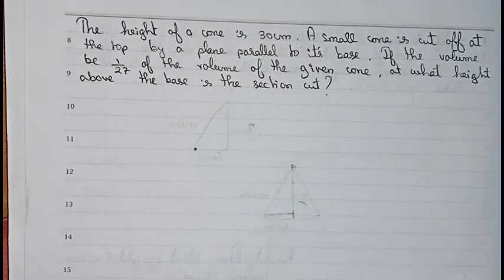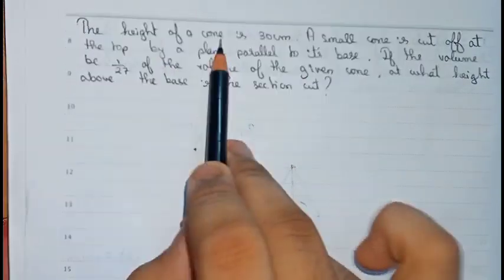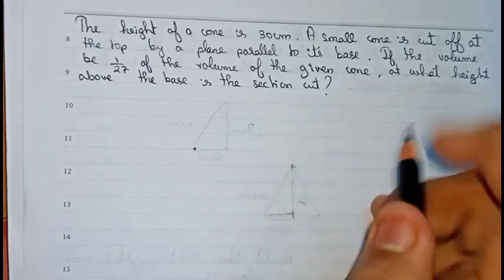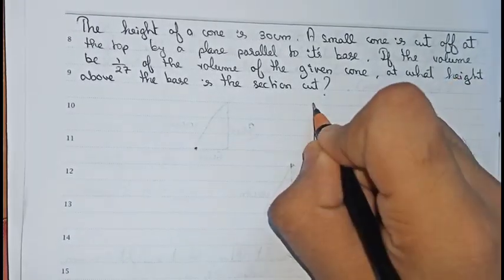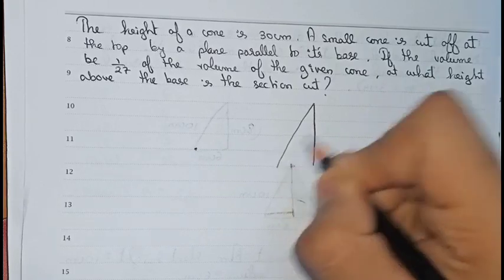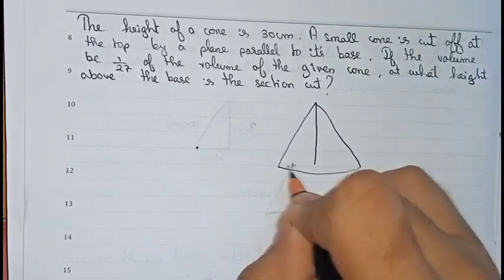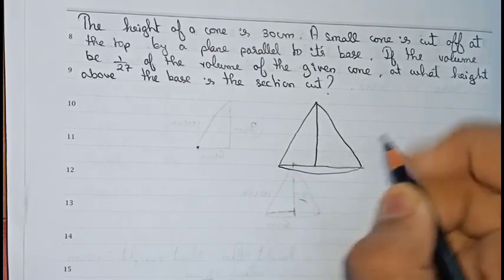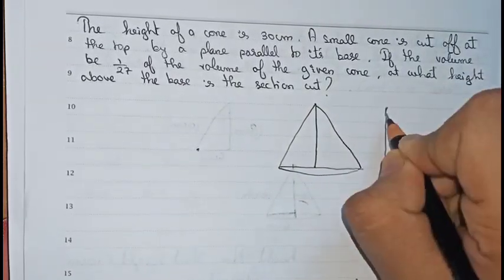So this is our question. As always, first we draw a diagram. The height of the cone is given as 30 centimeters, so we draw a cone that will have a height of 30 centimeters. This height will be 30 centimeters.